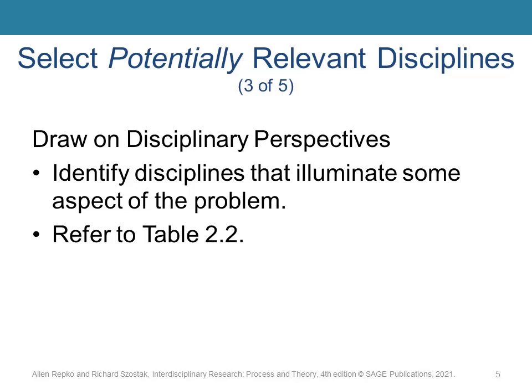For now, we are trying to find all of the potentially relevant disciplines — we don't want to miss anything at this point. Once we've identified a comprehensive list, we can then skim the literature using Google Scholar or the university library's databases to see if the discipline's experts have published material about the topic. We may want to jot down sources that appear to make significant contributions, and note which disciplines do not appear to study the topic. These notes will help us in the last sub-step of Step 3.